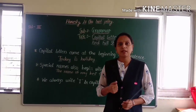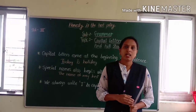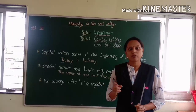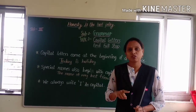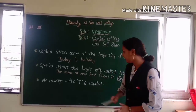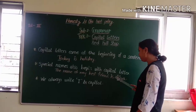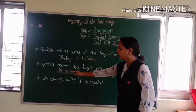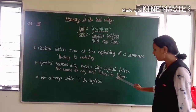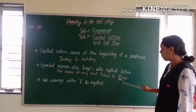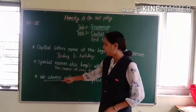Special names — as we learned in our previous session — refer to any special thing: person, animal, or place. That person's or animal's name begins with a capital letter. For example, 'The name of my best friend is Ria' — 'T' is capital because we start the sentence, and 'R' is capital because Ria is a special name.